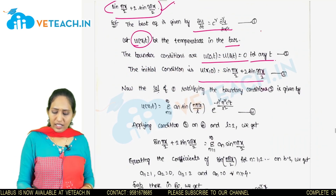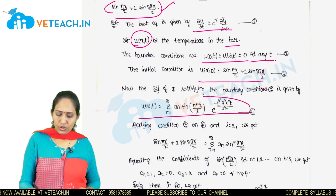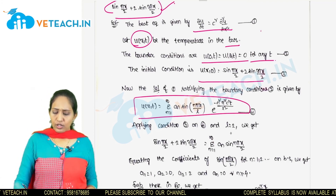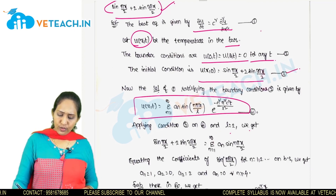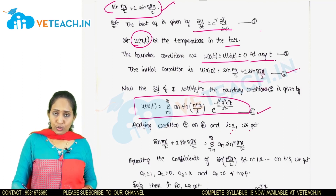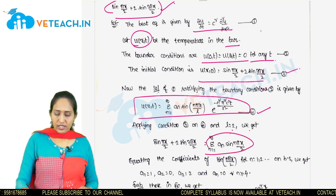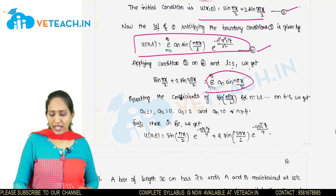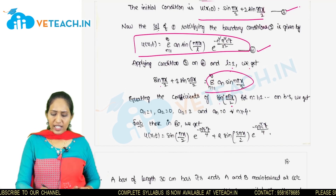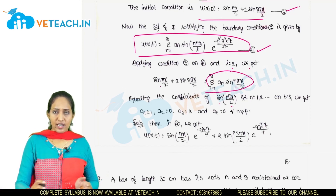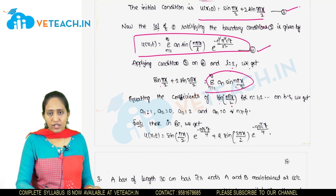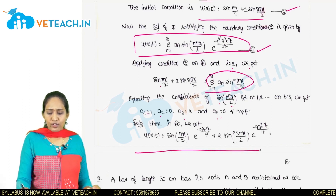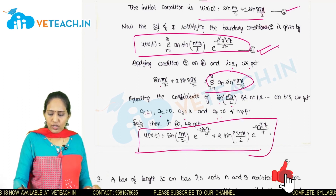The solution u(x, t) is obtained by applying the general formula with L = 2. Substituting and equating the coefficients of sin(nπx/2), we get the Fourier coefficients Aₙ. Substituting these values back into the general solution gives the required temperature distribution u(x, t).